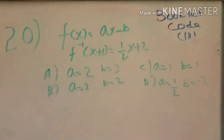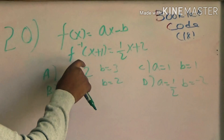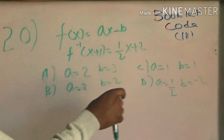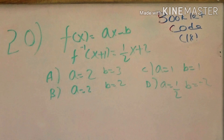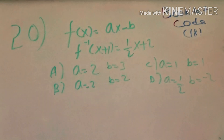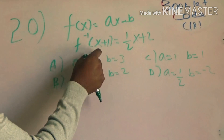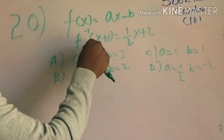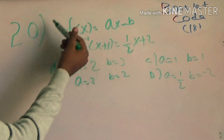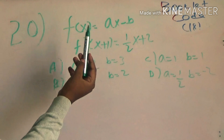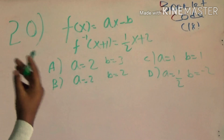f of x is equal to ax minus b. f inverse of x equals 1 over 2x. x plus 1 equals 1 over 2. x plus 2 equals 1. Find a in the binomial: x plus 1 over 2. We will solve for y.